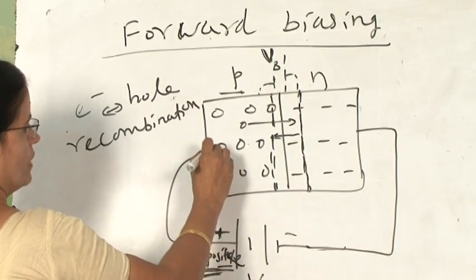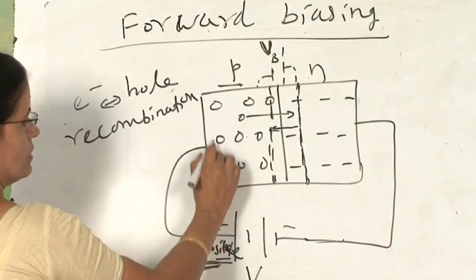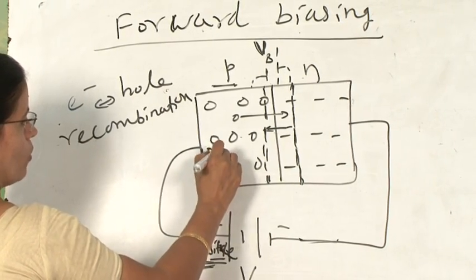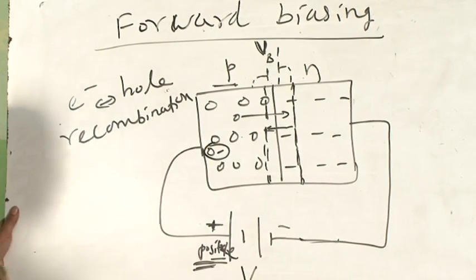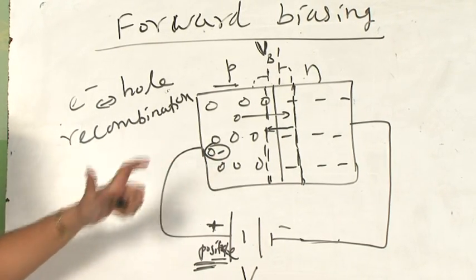When an electron falls into a hole, a covalent bond is broken here. When a covalent bond is broken, we know very well that one electron-hole pair is produced. When a covalent bond is breaking at one position, an electron and a hole pair is produced.